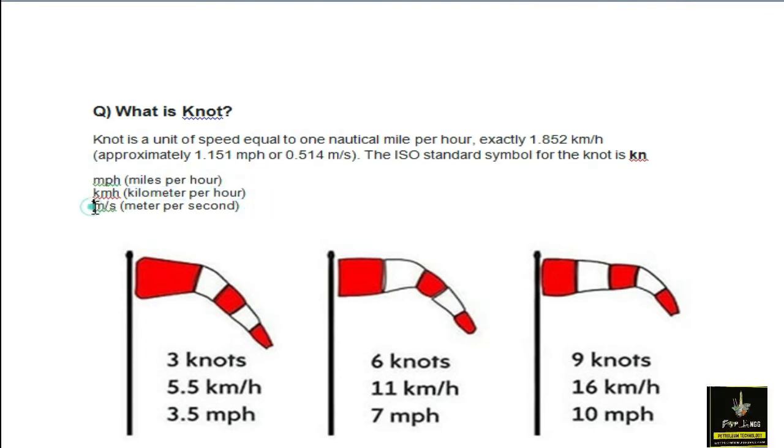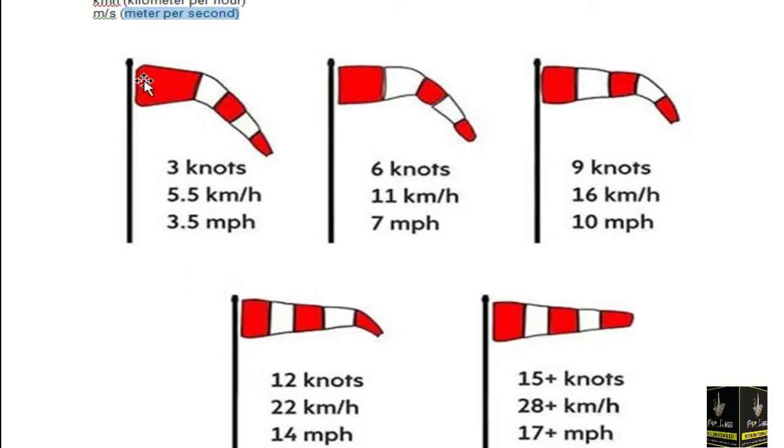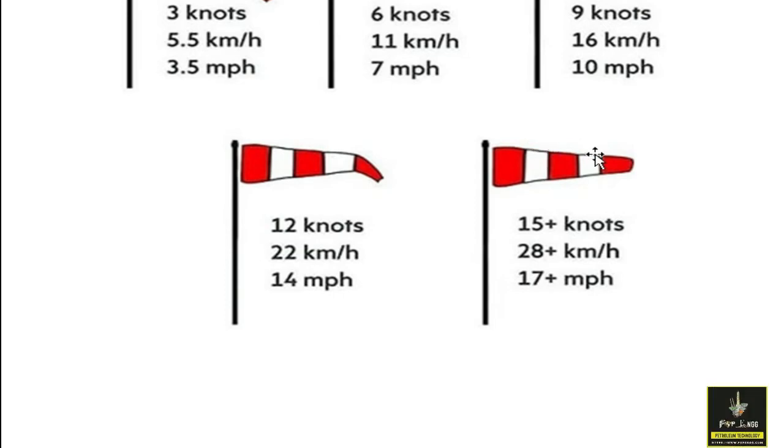mph is denoted by miles per hour, kmh is denoted by kilometers per hour, ms is denoted by meters per second. There are different directions: three knots, six knots, nine knots, 12 knots, and 15 plus knots. If the speed is around 20 knots, then you need to stop the operation in oil and gas industry. It means it's heavy wind.